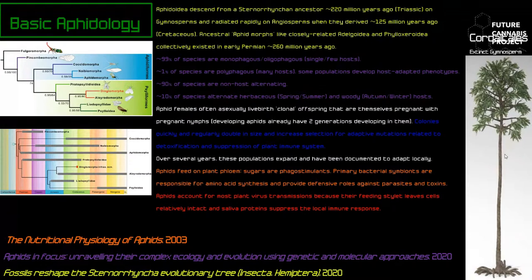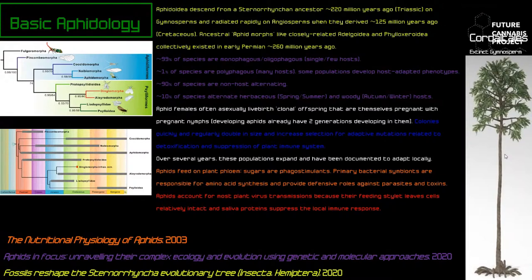Aphids are closely related to other insects people deal with. Looking at a phylogenetic map, the Aphidomorpha is the group we're discussing. They're closely related to scale insects — the coccids — but diverged from other recognizable organisms like whiteflies, which are the Aleyrodomorpha, and psyllids, which are the Sternorrhyncha.